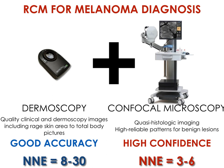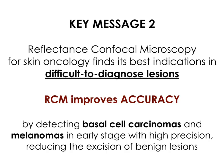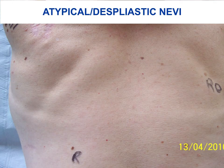Dermoscopy can provide excellent accuracy with very high sensitivity. The application of confocal microscopy on dermoscopically equivocal lesions is able to save over 50% of excisions of benign lesions with almost no risk of delaying a melanoma diagnosis. The key message is that reflectance confocal microscopy for skin oncology finds its best indication in difficult-to-diagnose lesions, improving accuracy by detecting basal cell carcinoma and melanoma in early stage with high precision.